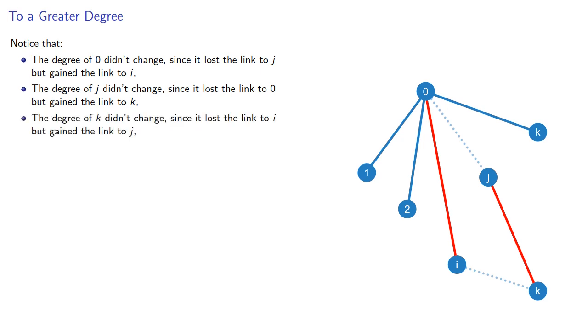The degree of vertex k didn't change, since it lost the link to i, but gained the link to j. And the degree of i didn't change, since it lost the link to k, but gained the link to 0.